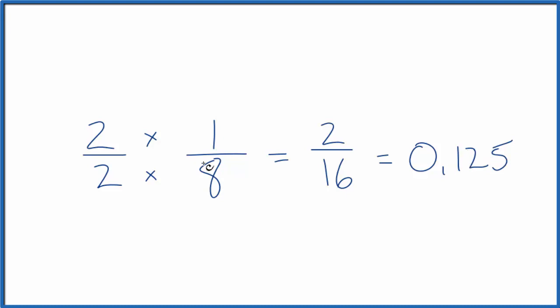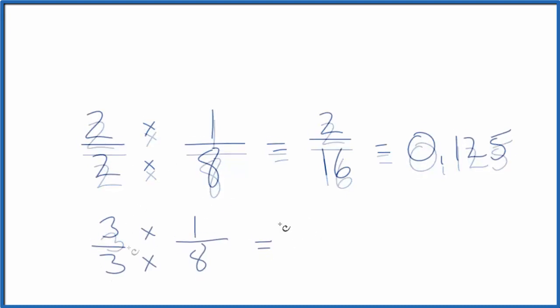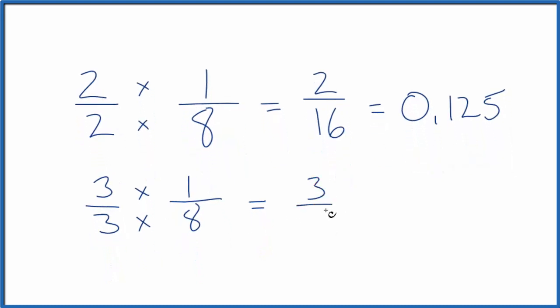Let's do another equivalent fraction for one-eighth. How about we multiply by three over three? Three times one is three, three times eight is twenty-four, and if you divide three by twenty-four, it equals zero point one two five. Just like the other equivalent fractions for one-eighth.